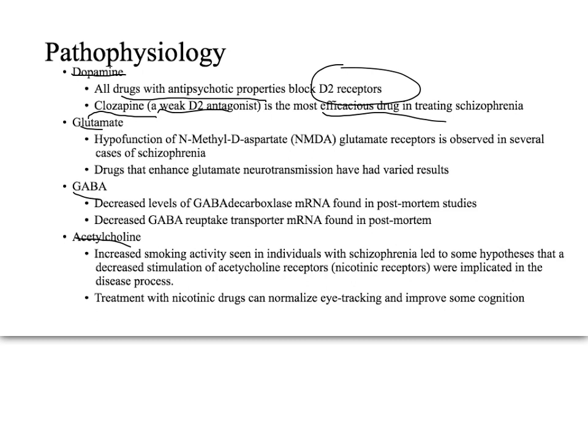Glutamate binds to a receptor called N-methyl-D-aspartate, or NMDA. These NMDA glutamate receptors are malfunctioning or functioning at a lower rate in those observed with schizophrenia, typically diagnosed post-mortem. Drugs have been developed to enhance glutamate neurotransmission, but the results have been varied — different glutamate agonists work on some people and not others, with no consistent outcome.